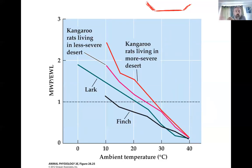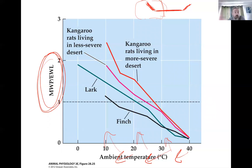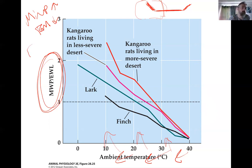All this means for us is that as temperatures get colder and colder, metabolic water production increases as metabolic rate also increases. What we can then do is take the ratio of metabolic water production to evaporative water loss. Metabolic water production goes up as temperature goes down, and evaporative water loss goes up as humidity goes down.